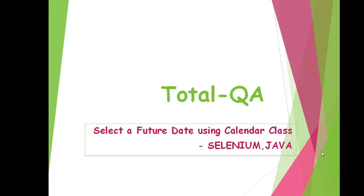Hi friends, welcome to my channel Total QA. Today we are going to focus on a new topic: how do we select a future date using the Calendar class. This example is mainly helpful from the Selenium tools perspective and also the Java API perspective.